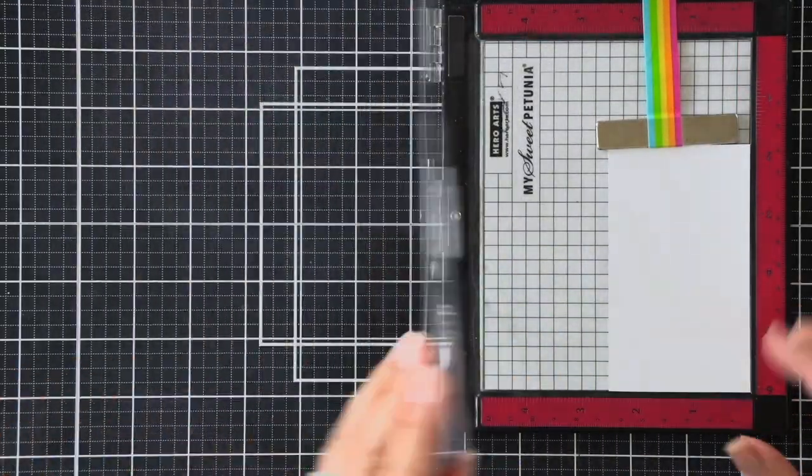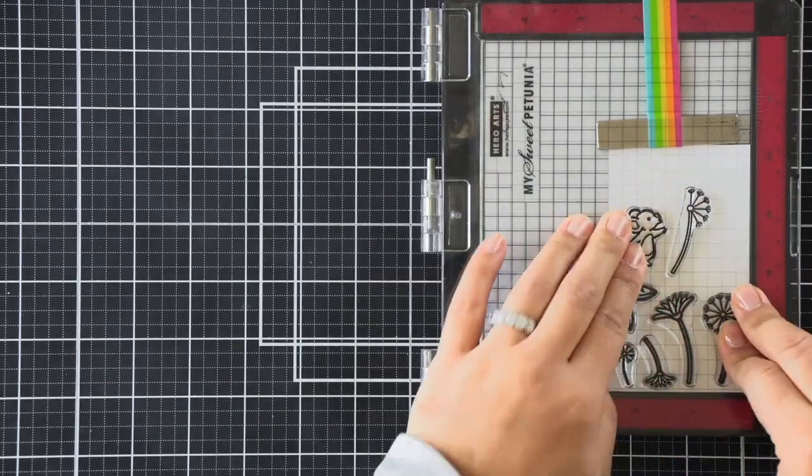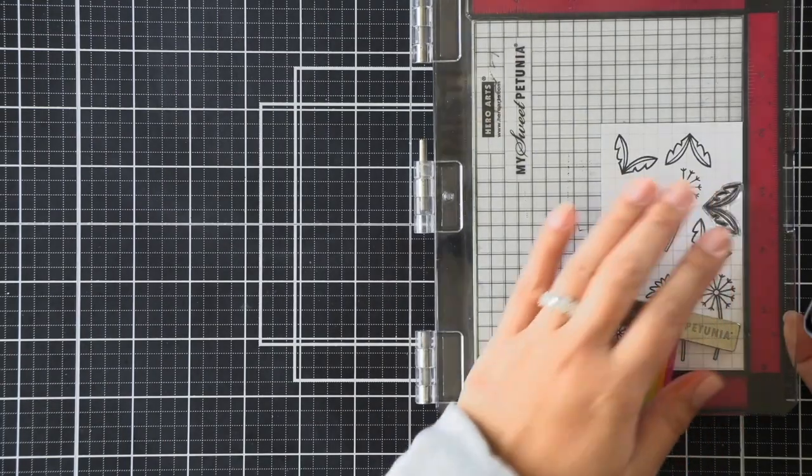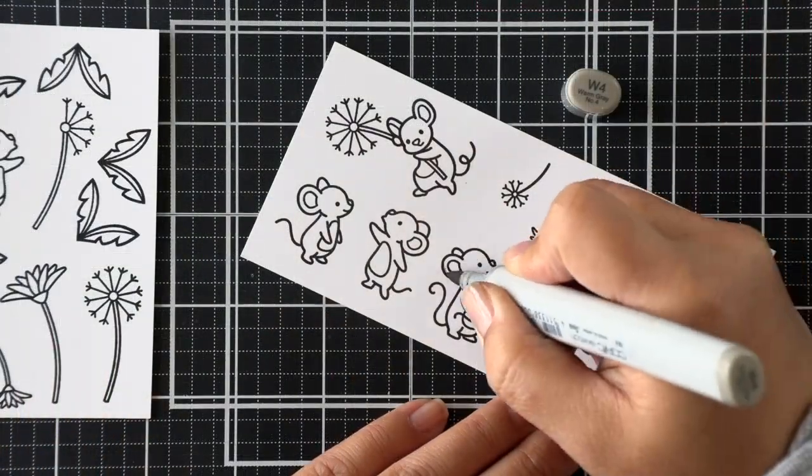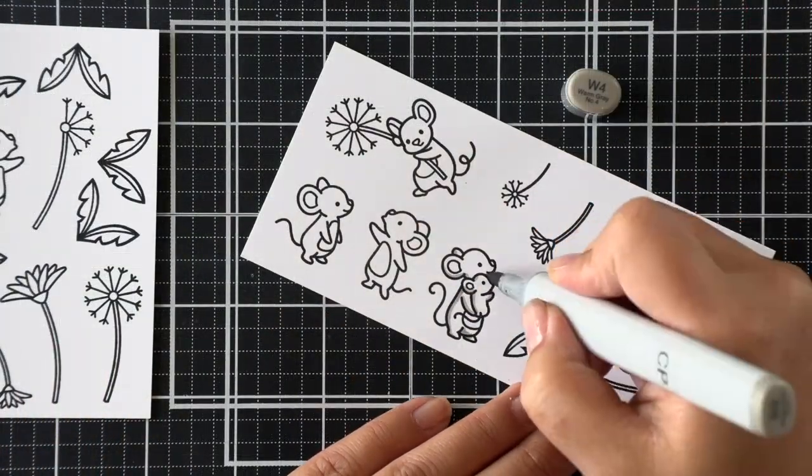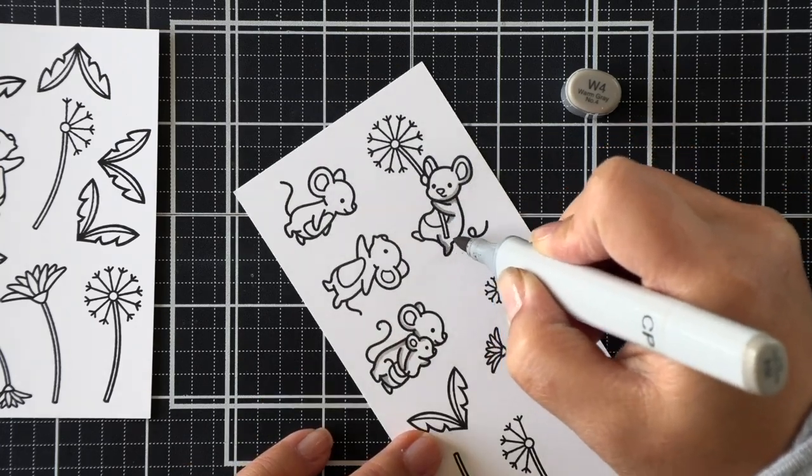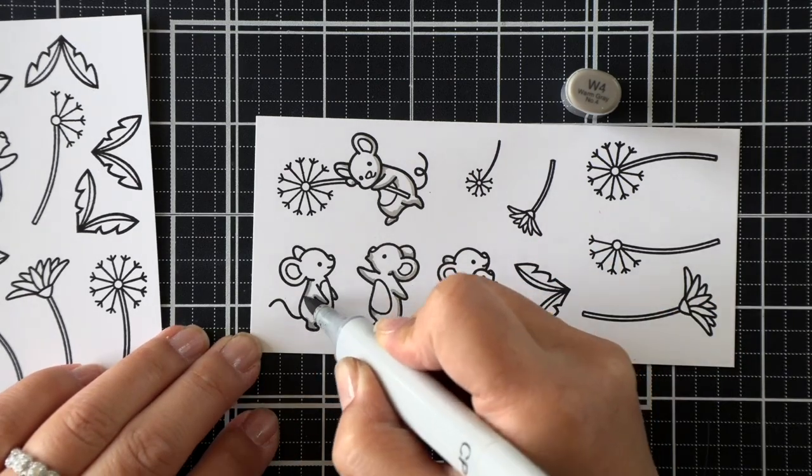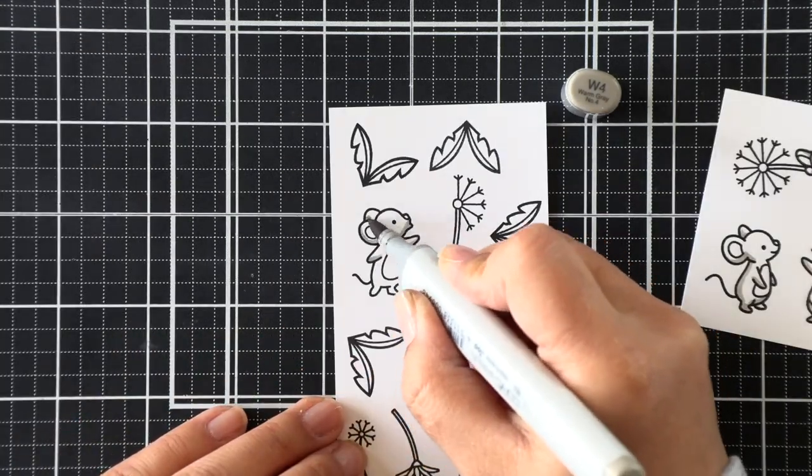So to get started here, we're going to be stamping the images of both sets that I just mentioned, and I'll be duplicating a few of the dandelion stems as well as those leaf bases. We'll be coloring all of those very simply, very quickly. The mice are gray, the dandelions are yellow and green, so not a whole lot to explain here.